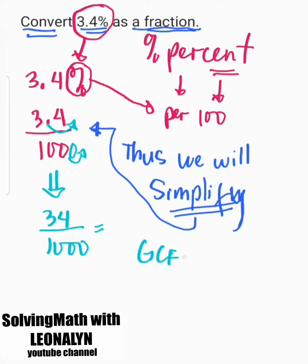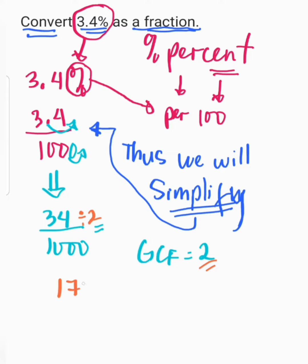And the greatest common factor is 2. So therefore, we will use this 2 to simplify 34 over 1000. 34 divided by 2 equals 17. 1000 divided by 2 equals 500. So therefore, the answer is 17 over 500.